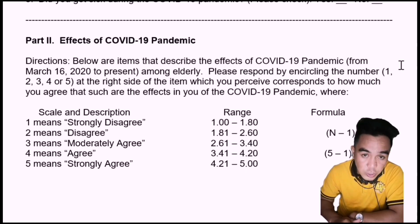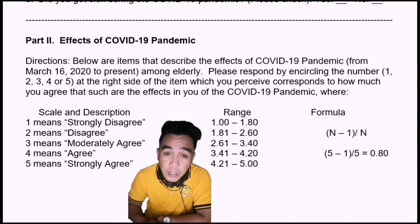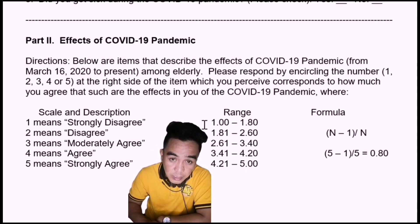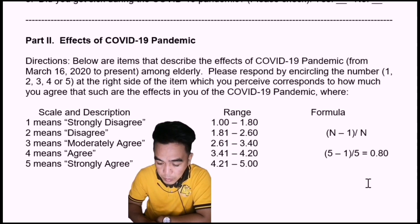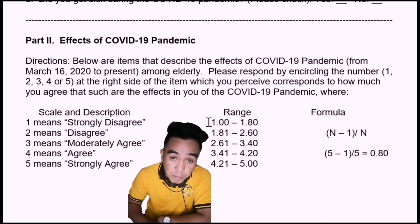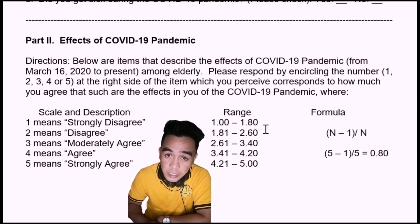In determining the range when we treat this scale, we need to consider this formula: (N minus 1) over N, where N means the total scale in the Likert scale. In this study, the total scale is 5, so substituting: 5 minus 1 over 5, the result is 0.80, which is the distance from each interval. So from 1 plus 0.80, it becomes 1 to 1.80. Then after 1.80, that is 1.81, add it by 0.80, we have now 2.60.